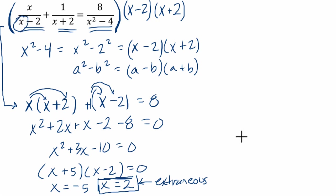So that means, we'll check when x equals 2. That would essentially give us 2 over 0 plus 1 over 4 equals 8 over 2 squared, which is 4 minus 4, which is 0. So this is not true.